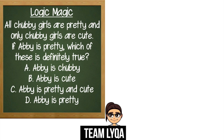Here is the question: All chubby girls are pretty, and all and only chubby girls are cute. If Abby is pretty, which of these is definitely true? A — Abby is chubby. B — Abby is cute. C — Abby is pretty and cute. D — Abby is pretty. The key to solving this is knowing how to draw it.